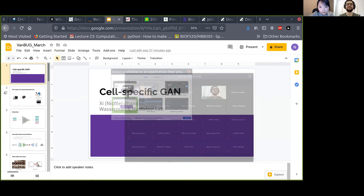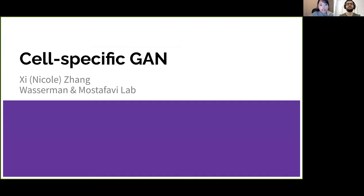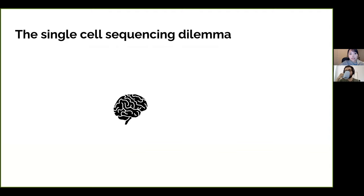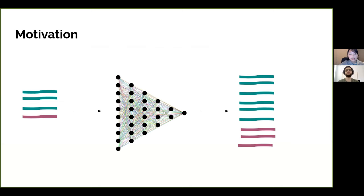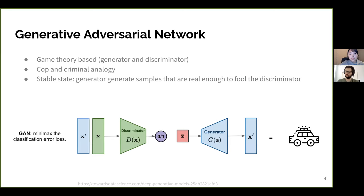Hello, I'm Nicole from the Wasserman Lab. What I'm presenting today stems from the single-cell sequencing dilemma. When you're interested in a tissue like the brain and perform single-cell sequencing, the data often doesn't have a lot of rare cell type signals and has a lot of noise. What if we could have a neural net that can amplify the signal and denoise the data?